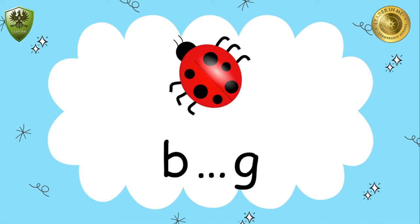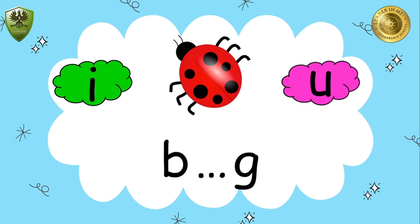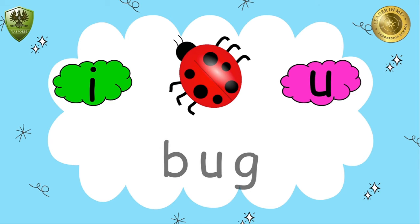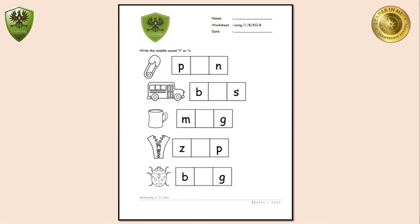Which one is the middle sound of 'bug' — 'e' or 'uh'? Yes, that's right, the middle sound is 'uh'. Bug, bug. Okay, do you get it? Good friends!